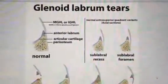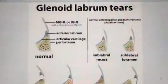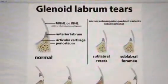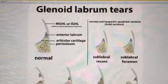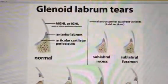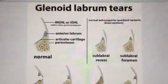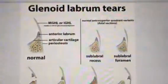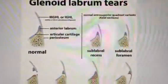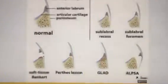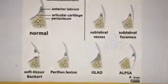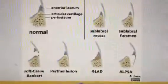Let's get started with glenoid labral tears. We should mention that the inferior glenohumeral ligament, which we reviewed in our prior video, or the middle glenohumeral ligaments, as they attach to the glenoid — you'll see the relationship with the labrum and the periosteum here of the glenoid. You have some normal variants you should know to avoid misdiagnosing them as SLAP tears. We're more interested in the lesions at the bottom, which are the ones usually associated with anterior shoulder dislocation.